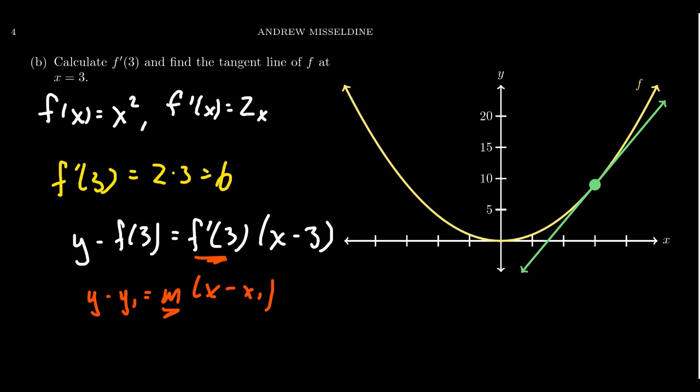The slope of the tangent line is the evaluation of the derivative because the derivative gives you the formula for the tangent line here. And so plug in the values we know. We get y minus f of three. f of three, you're going to take three squared, you get a nine. And then f prime of three, we saw was six.